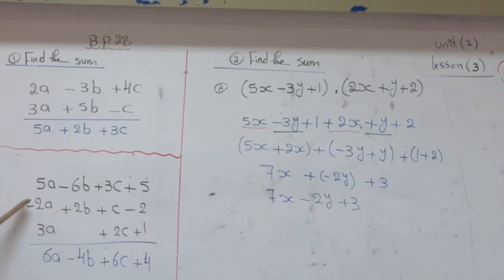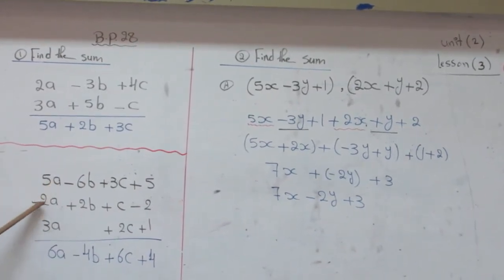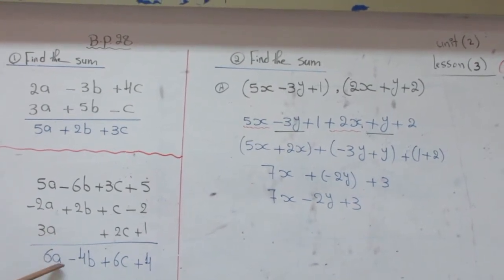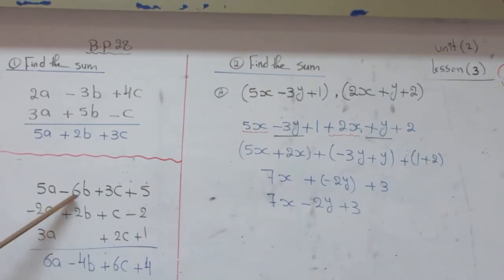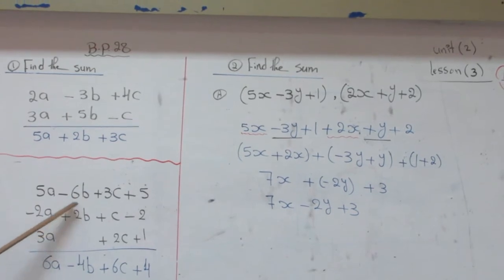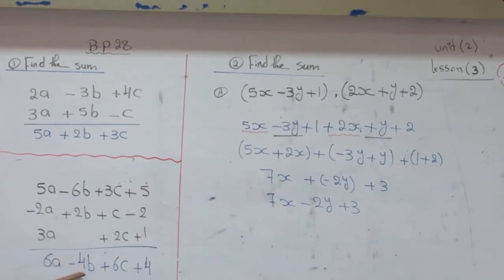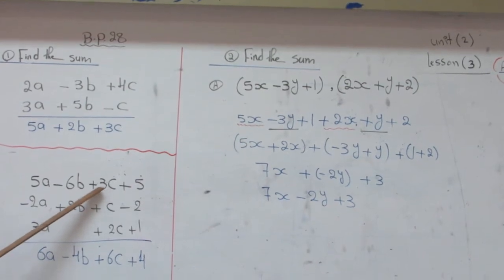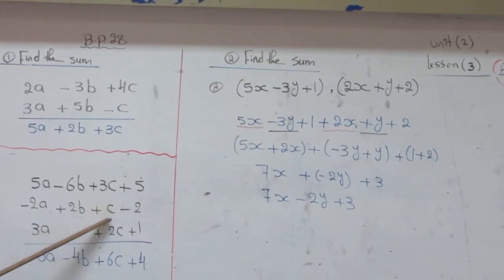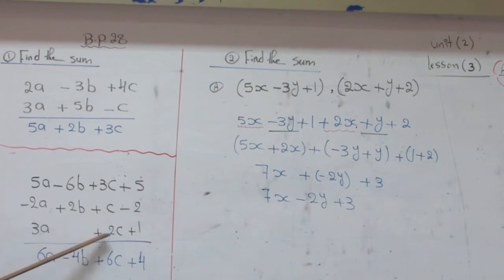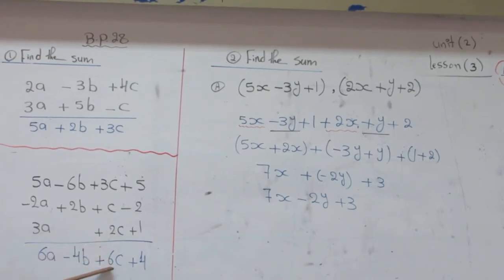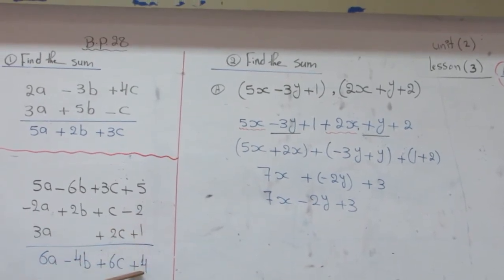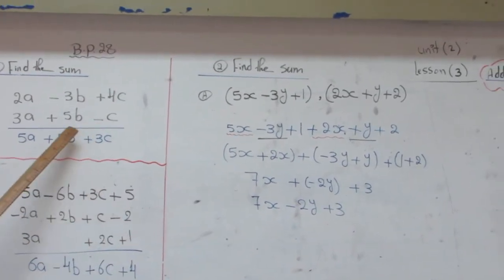Then collect the like terms. First, I have here 5 minus 2 plus 3 will be 6A. I will make negative 6 plus 2, which will be negative 4B. Plus 3C plus 1 plus 2 will be 6C. 5 minus 2 plus 1 will be 4. This is the first way.